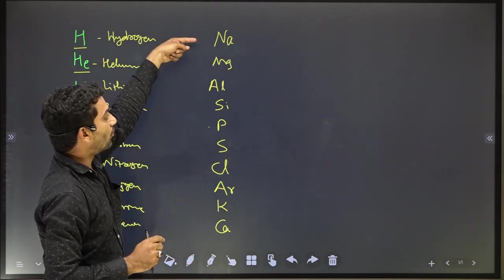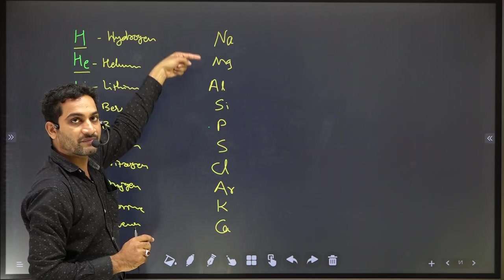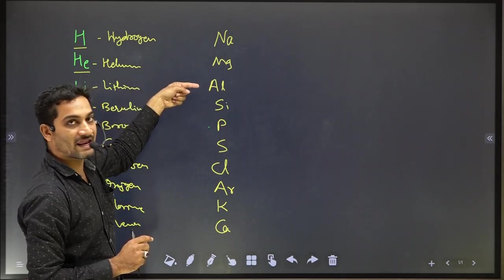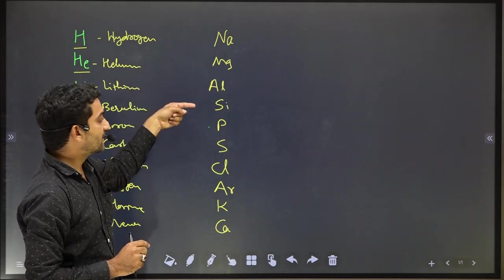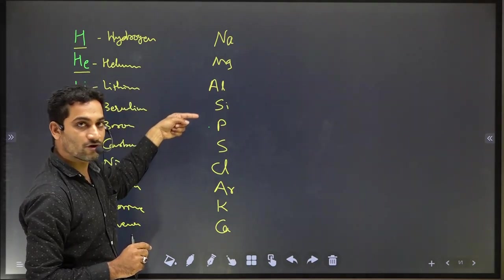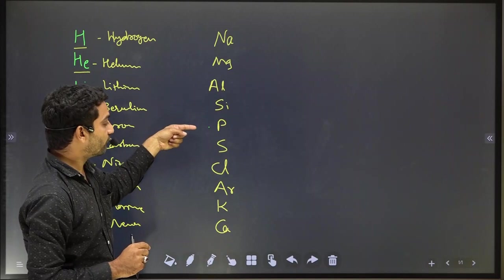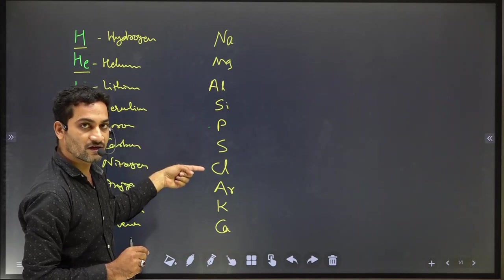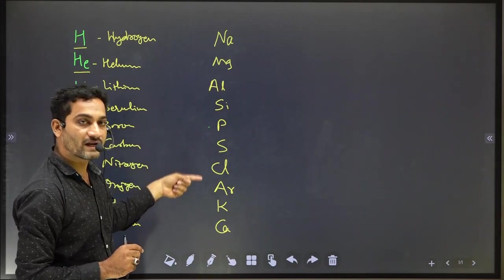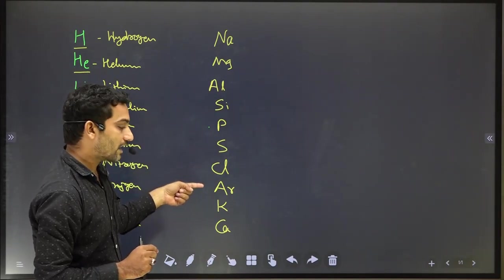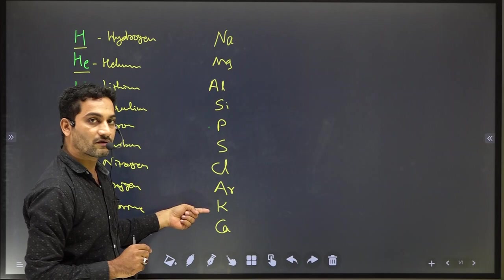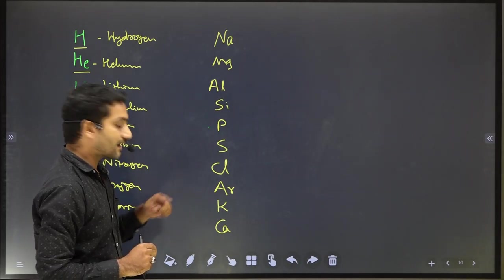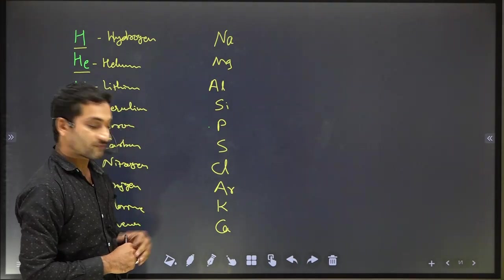Let's revise once more: Soh — Sodium, May — Magnesium, A — Aluminium, C — Silicon, 4 — Phosphorus, Sa/S — Sulphur, Cl — Chlorine, A — Argon, Po — Potassium, K — Calcium.